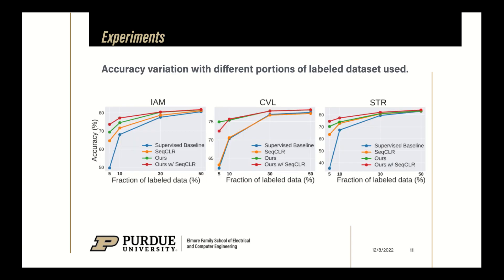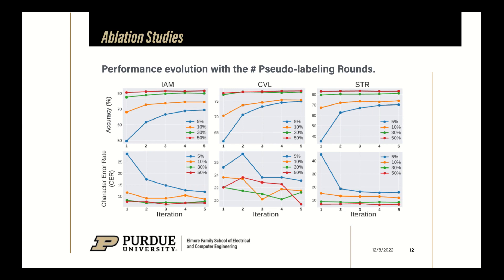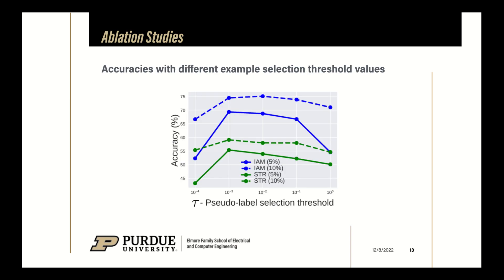In this plot, we visualize the word prediction accuracies obtained by different methods on different portions of the data used as labeled examples. We also visualize the evolution of the performance at different rounds of pseudo-labeling and retraining. Additionally, we study the variation in performance with different uncertainty threshold values and observe that for threshold values too low or too high, the performance suffers.